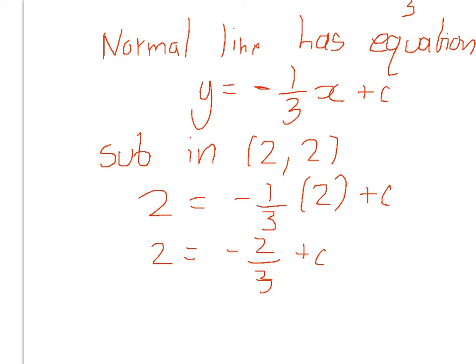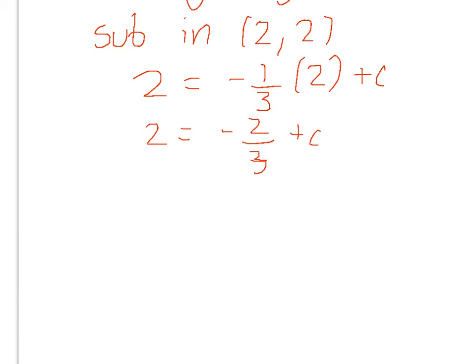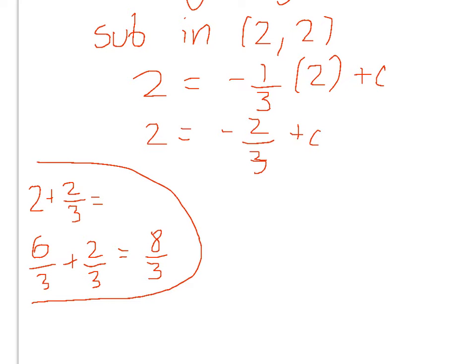2 times minus 1 third is minus 2 thirds plus c. We need to add 2 thirds to both sides. Remember, 2 is made of 3 thirds, so in 2 there's 6 thirds plus 2 thirds, which is 8 thirds. So we've got 8 over 3 equals c.